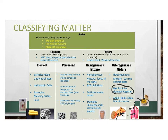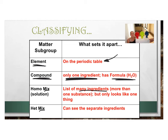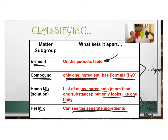So, if you run into some matter and want to know what it is, here's how to tell the difference. Elements look the same throughout and you'll find their names on a periodic table. Compounds also look the same throughout, but they have only one ingredient that has a formula. If something is a mixture, there are going to be many ingredients. If it's homogeneous, it looks like one thing. If it's heterogeneous, you can see the separate ingredients.